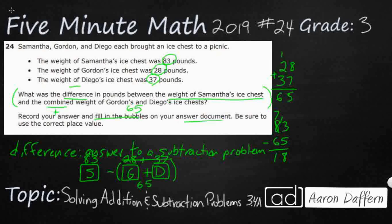Just to double check: if I flip the subtraction problem, 18 plus 65 should equal 83. Eight and 5 is 13, carry the 1. One and 1 is 2, and 2 and 6 is 8. Yes, that works — we get 83. You can also verify: 65 minus 37 should equal 28, which checks out too.